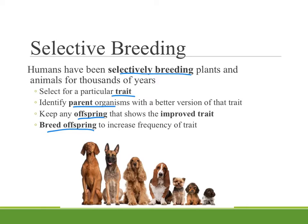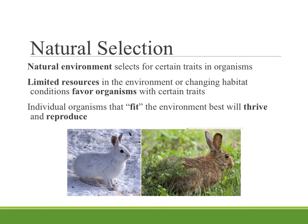We've done that to give us bigger chickens and turkeys for the dinner table, to produce juicier tomatoes and sweeter apples, and to make all the many sizes of dogs that you can find in the world, from very small to very large. So that's selective breeding.